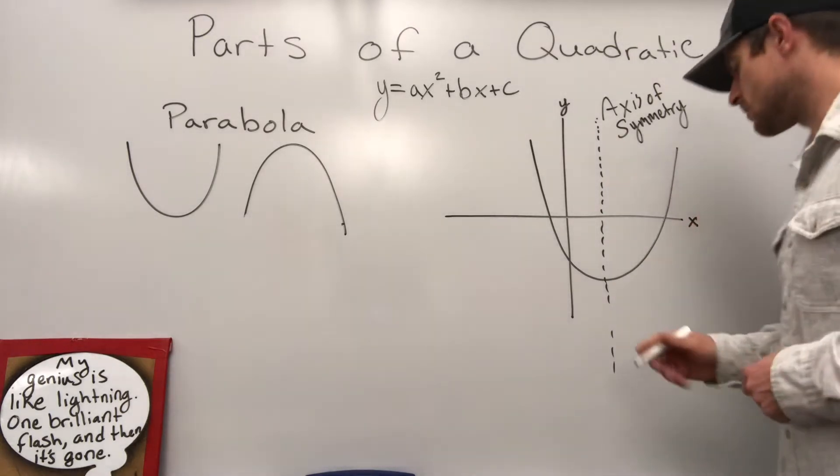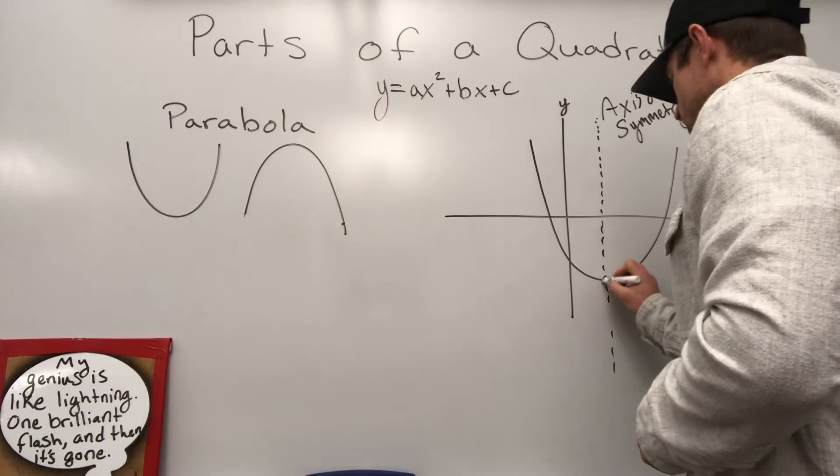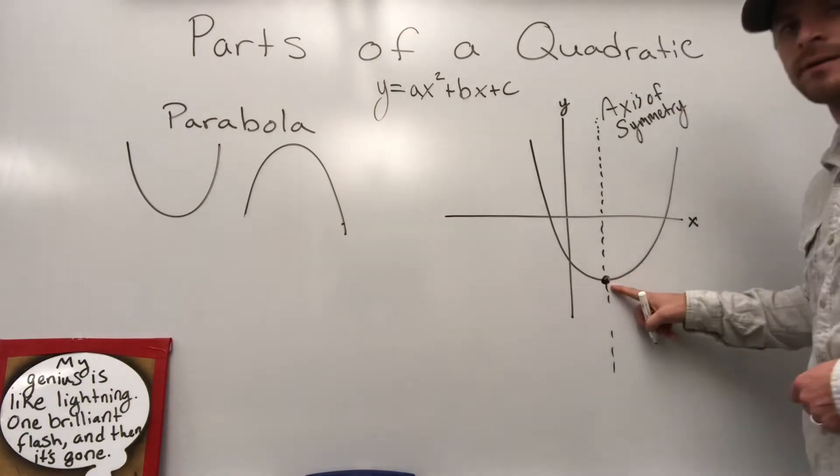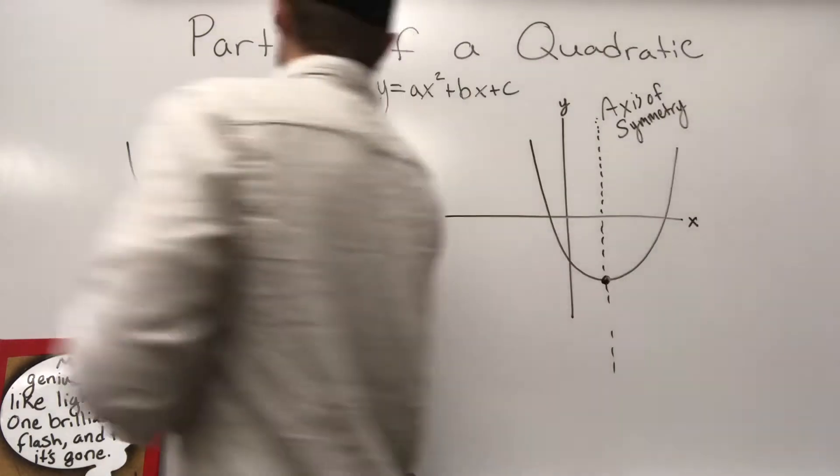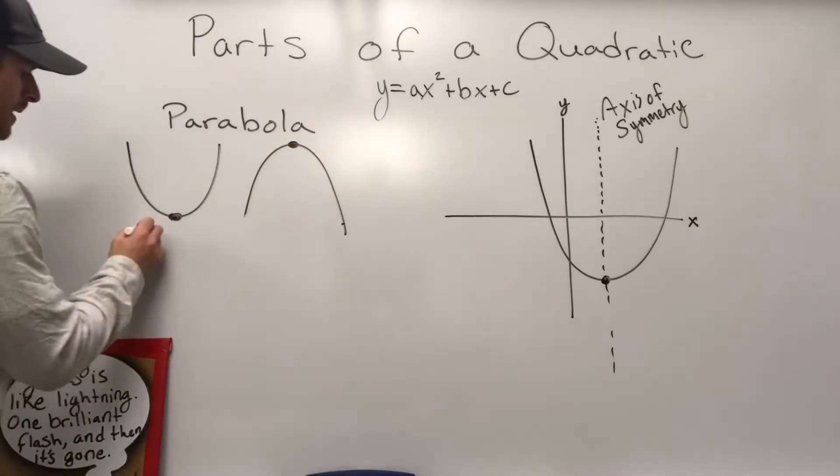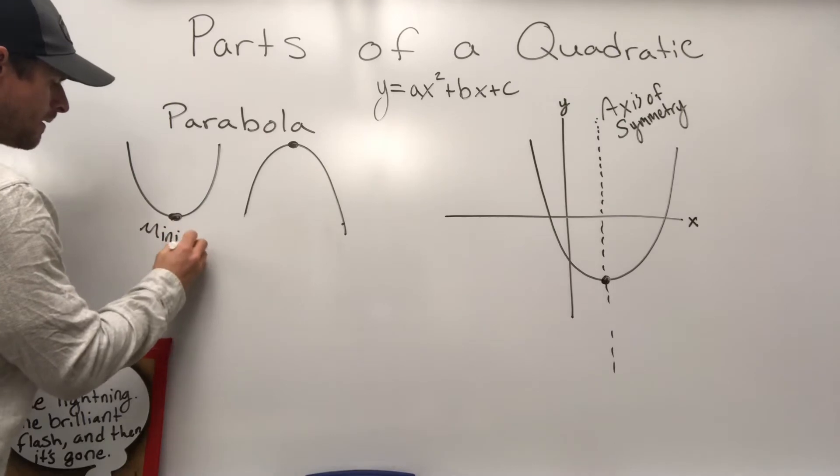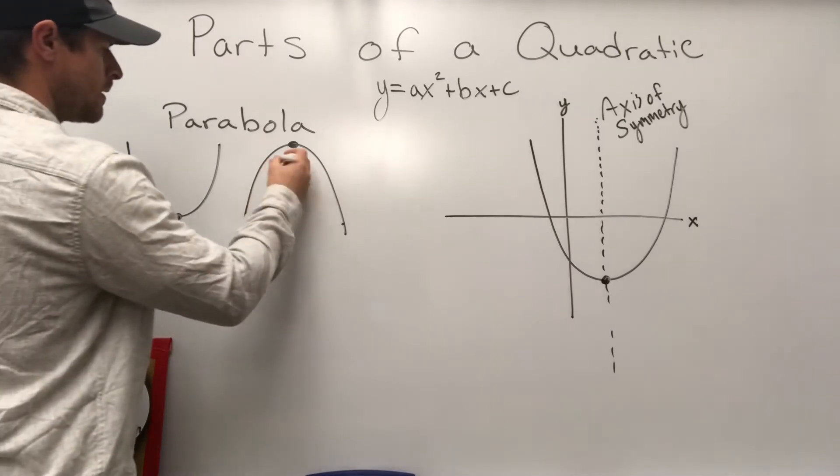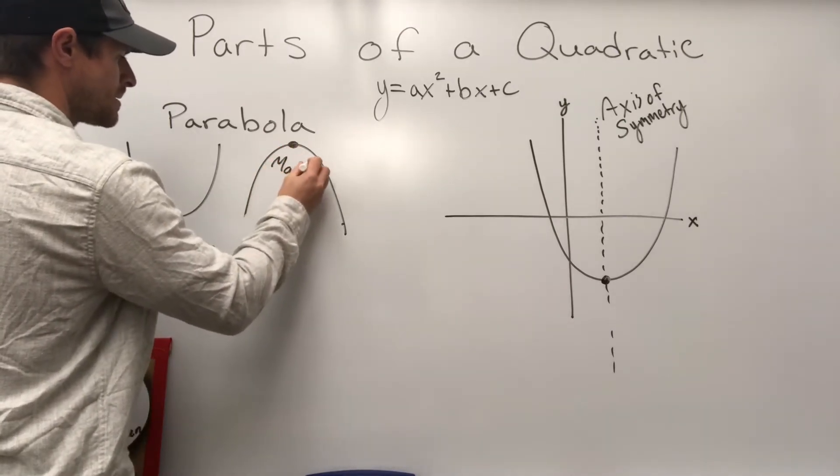Next part you need to understand is the low point. In this case, it's a low point. In this case, it would be a high point. So when it's a low point, we call it a minimum. When it's a high point, you guessed it, we call it a maximum.